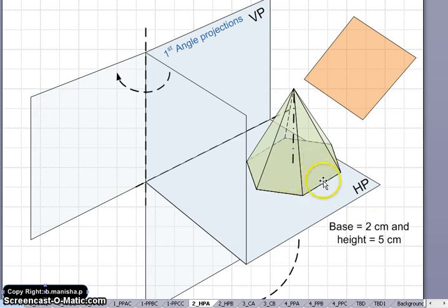So here in this figure, this hexagon pyramid is sitting in a first angle projection. It is sitting on a horizontal plane, so its base is sitting on a horizontal plane and its two sides are parallel to vertical plane and this axis is also parallel to vertical plane.